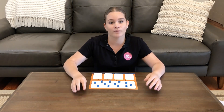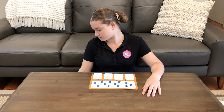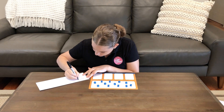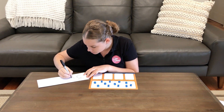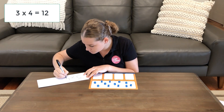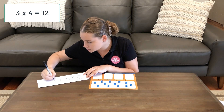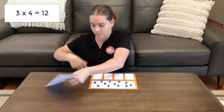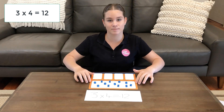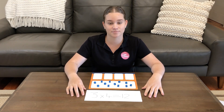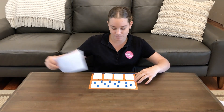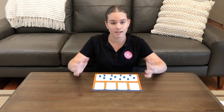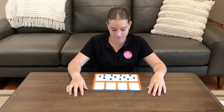3 times 4 is 12, so our total is 12. We can put this in an equation: 3 times 4 equals 12. That's our equation to match the story we just acted out.